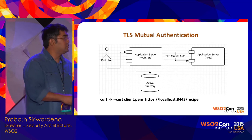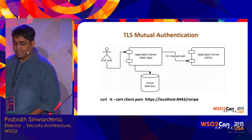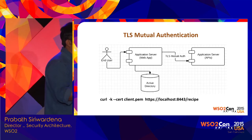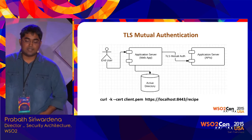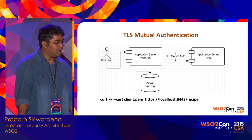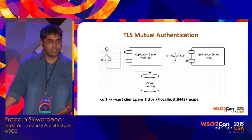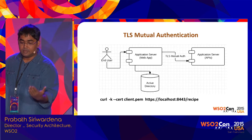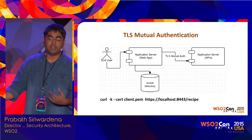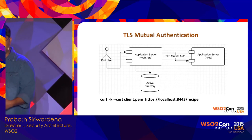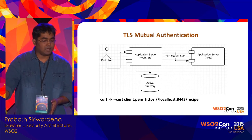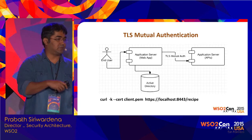Another approach is TLS mutual authentication. This is for direct authentication and mostly used when you have a trusted subsystem. In this example, the end user authenticates the web application in some way — that's not related to the API, and the API doesn't need to know about the end user's details. Once the web application authenticates the user and wants to retrieve data from the back-end APIs, that channel can be secured with certificates. For the API, the web app is a trusted subsystem.